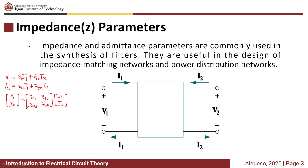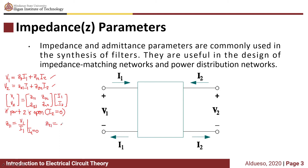To solve for the Z parameter values, we open one port and apply a source to the other port. For example, if we open port 2, meaning I2 = 0, we can solve for Z11 and Z21. So Z11 = V1/I1 when I2 = 0, and Z21 = V2/I1 when I2 = 0.